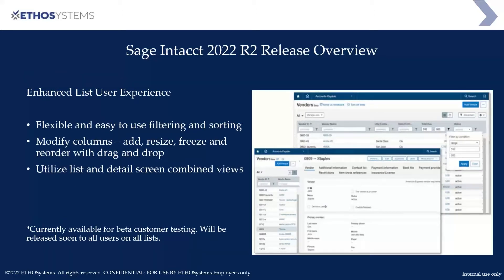The enhanced list user experience has been designed to be more flexible and easy to use with filtering and sorting. You can modify columns — add, resize, freeze, and reorder them — using drag and drop. You can also utilize a list and detail screen combination; for example, viewing AP vendors in a list while seeing the detail of a selected vendor alongside. This is currently available for beta customers but will be released to all users soon.